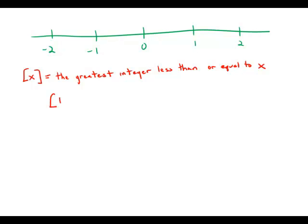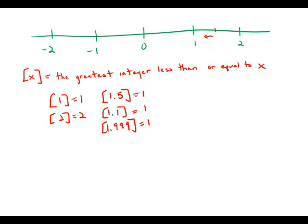If we took [1], we'd get 1. If we took [2], we'd get 2. If we took [1.5], well, the greatest integer that is less than 1.5 is 1. If we took [1.1] or [1.999], all of these we would have to round down to the greatest integer less than them, which is 1.